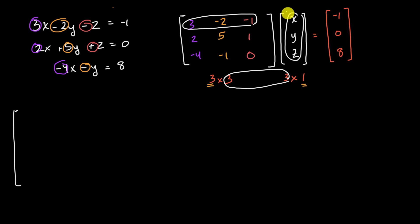So this is going to be three times X, which is three X, minus two times Y, minus two Y, minus one times Z, minus one Z, like that.